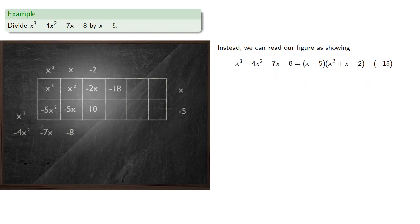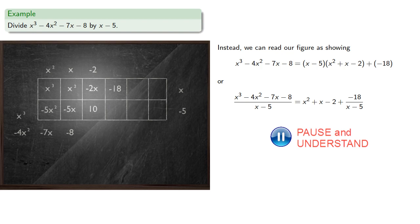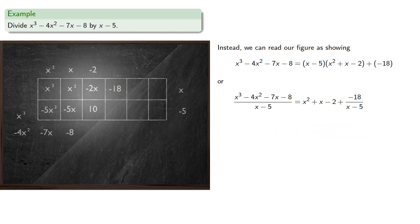We can rearrange: if we divide everything by x minus 5, we can equivalently read this as a quotient — x cubed minus 4x squared minus 7x minus 8 divided by x minus 5 gives us x squared plus x minus 2 with remainder negative 18.